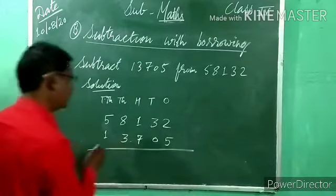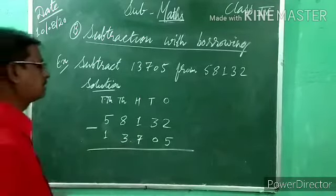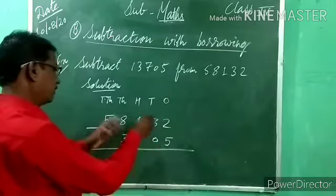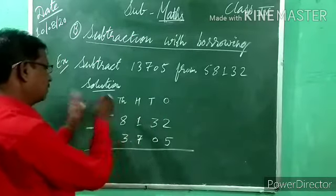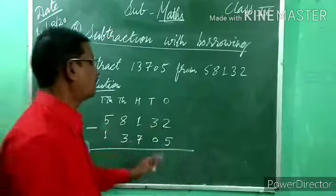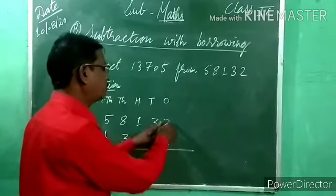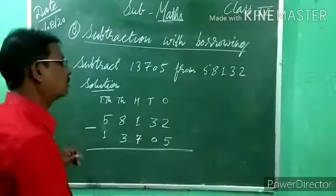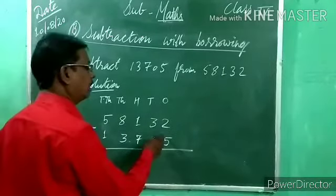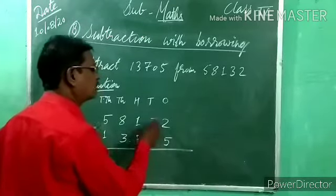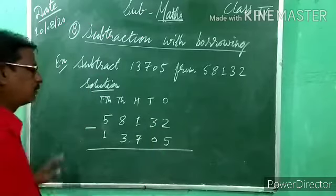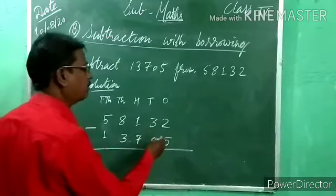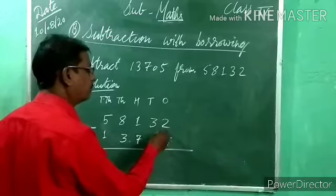Now subtract. Start from the right side. 2 minus 5 — 5 is bigger, 2 is small. We cannot subtract, so we need to borrow from the next column to make it bigger.